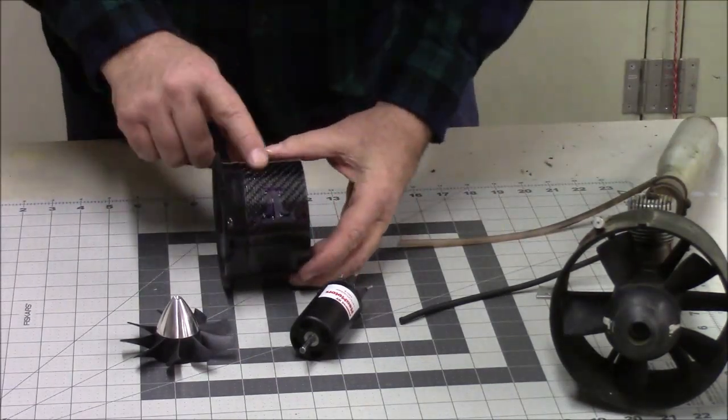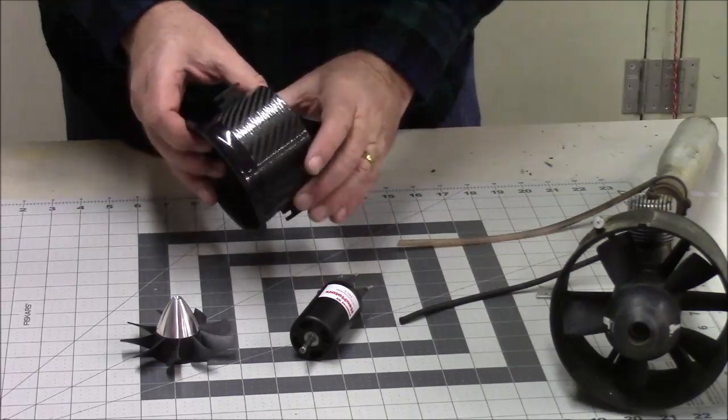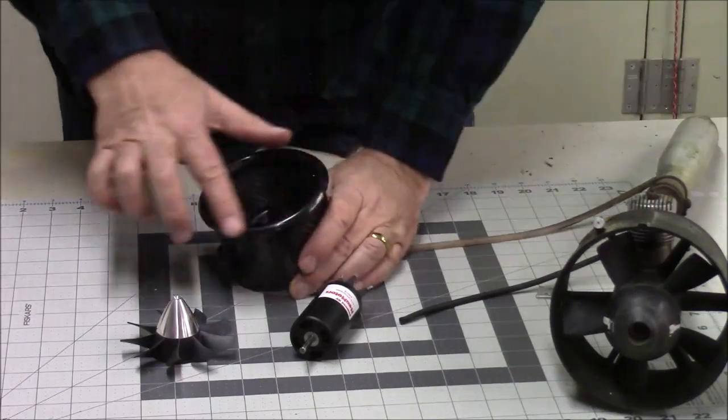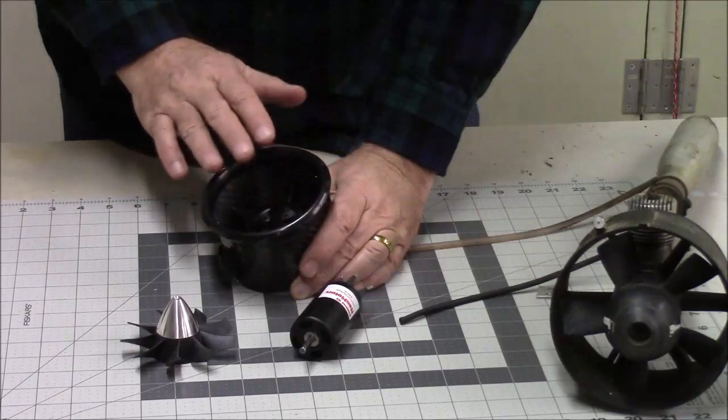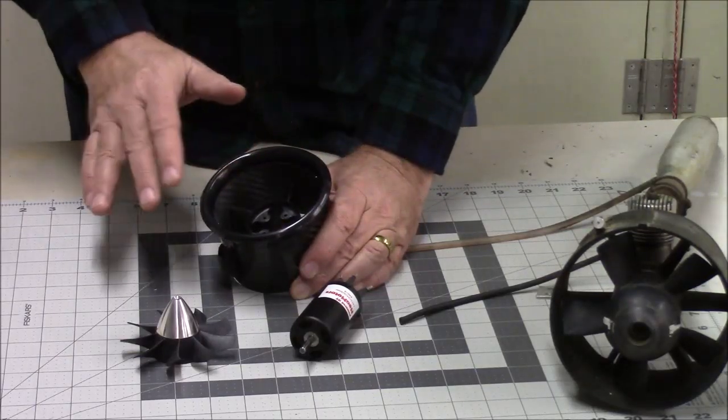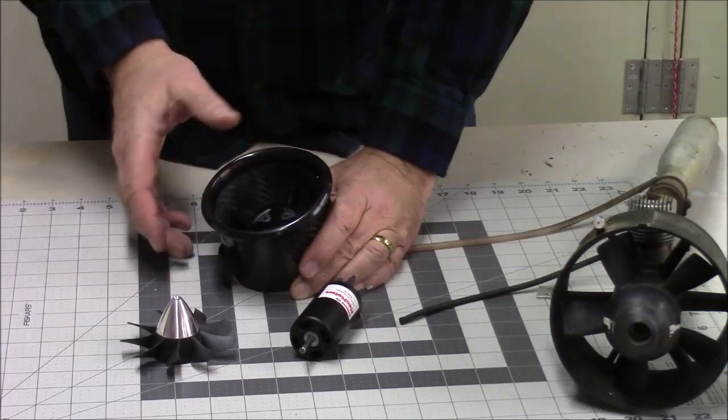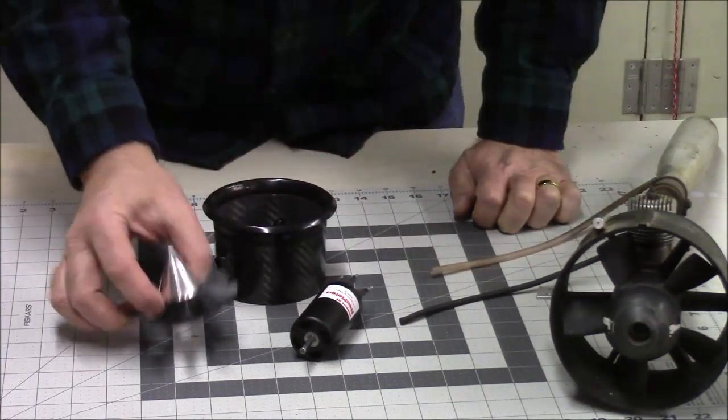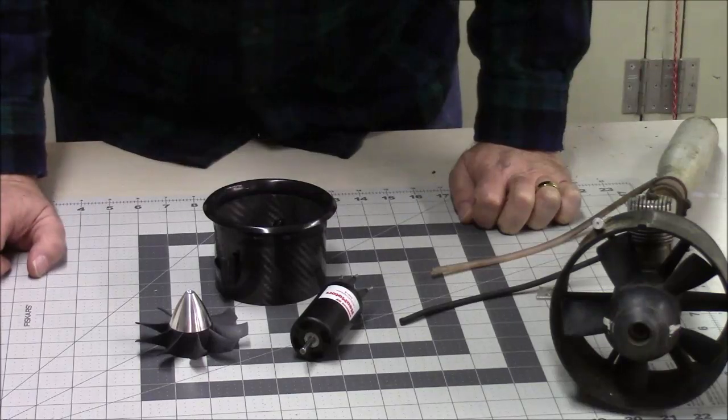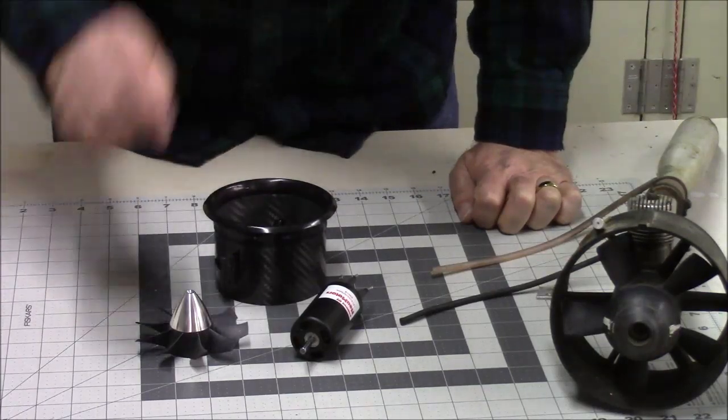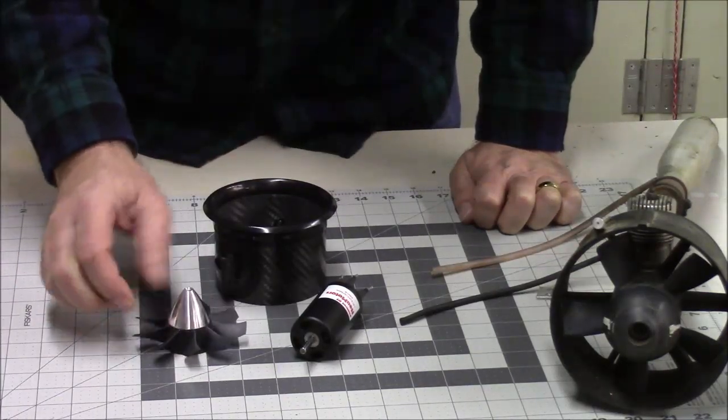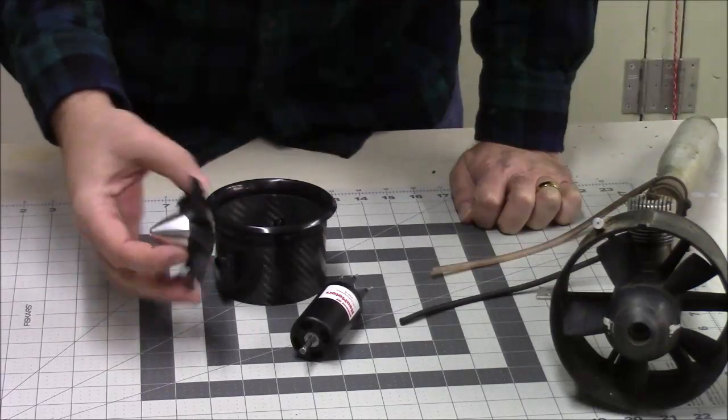The fan unit itself, the housing is very nicely constructed carbon fiber. It comes with this nice lip around here. This lip is really critical. It actually increases the amount of thrust available to the unit by smoothing the airflow as it comes in. It's turning a 9-blade carbon fiber fan unit. This fan unit is very well balanced right out of the box.